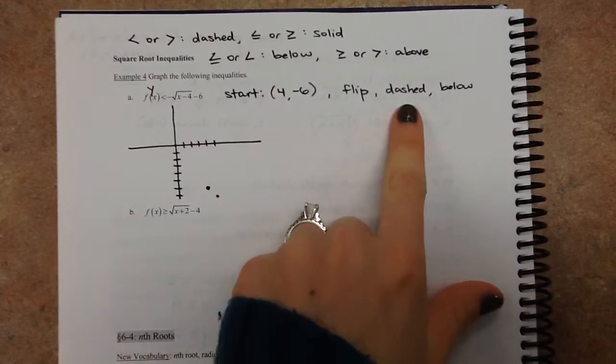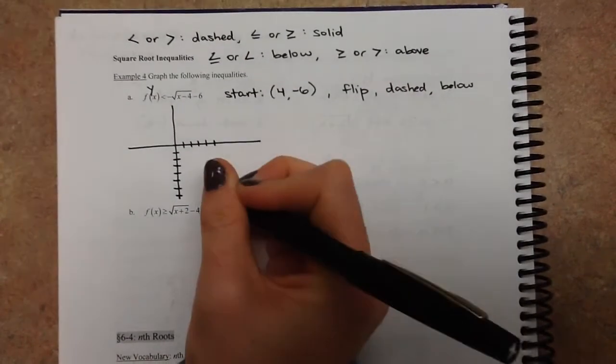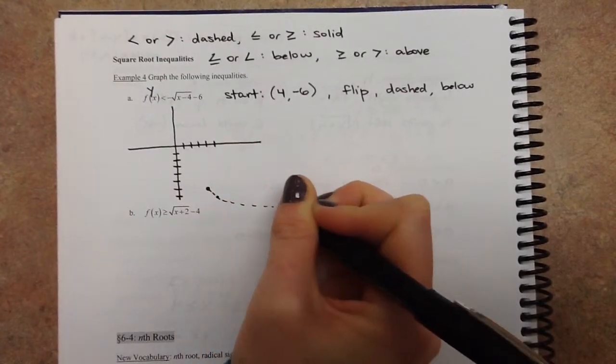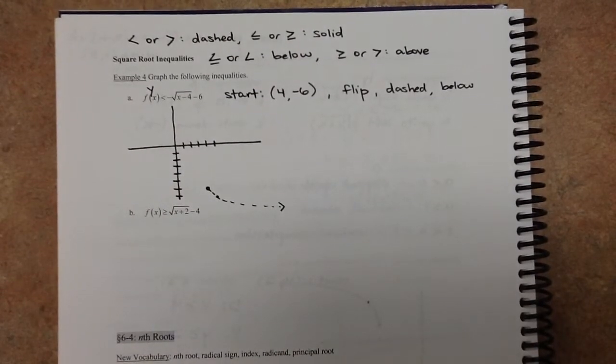Now when we're actually shading it, it's dashed and we're shading below. So draw a nice little dashed line like that. And then make sure when you shade it, the less than means you shade below, and it should be within the domain.